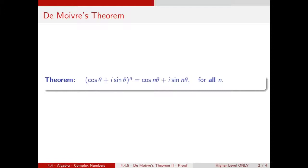In our previous video, we saw De Moivre's theorem, which said that cos theta plus i sine theta to the power of n is equal to cos n theta plus i sine n theta for all n. And now we want to prove the theorem where n is a natural number.